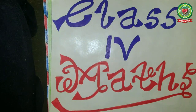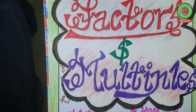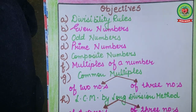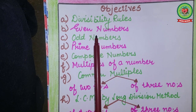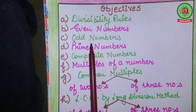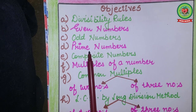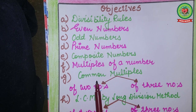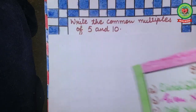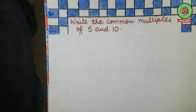Hello students, welcome to math class. In chapter Factors and Multiples, you have already done topics: divisibility rules, even numbers, odd numbers, prime numbers, composite numbers, multiples of a number, and common multiples.